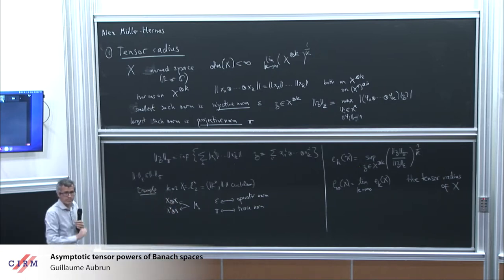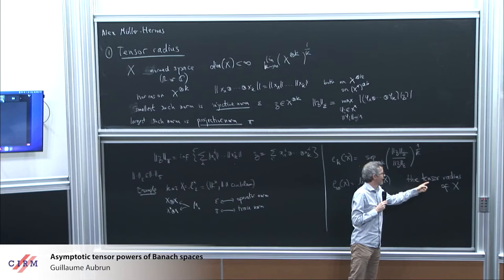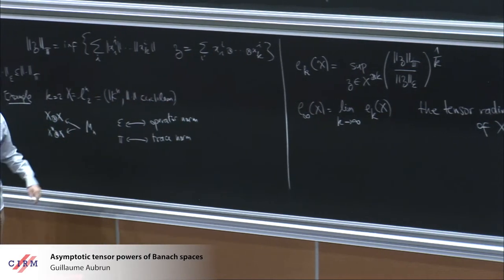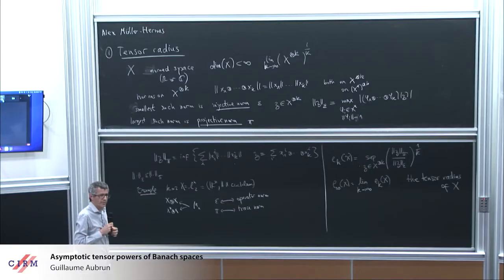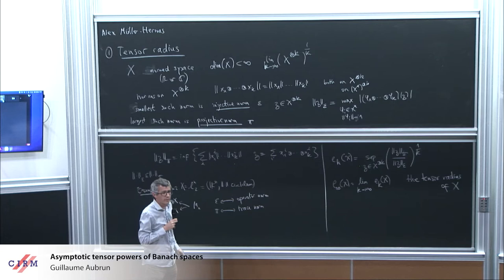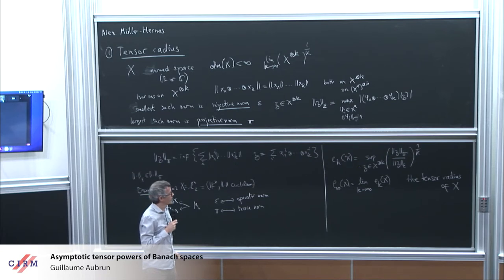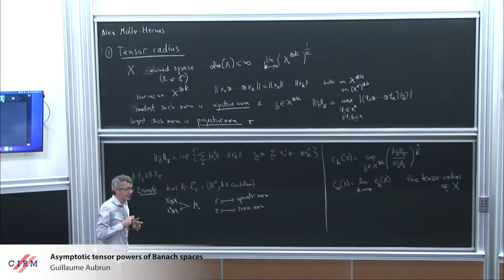The name comes by analogy from the spectral radius formula — it's a maximization problem over tensors. The tensor radius is not multiplicative in general. We can compute the value in some cases, including trace class or operator spaces, but it's not multiplicative.